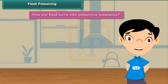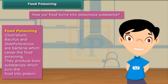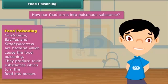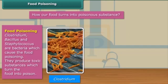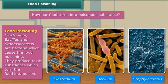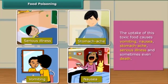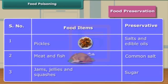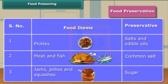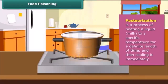Friends, in summer season, if food is left in the open for a longer duration, the food turns stale and finally becomes a poisonous substance. The cause of this is bacteria. There are some bacteria like Clostridium, Bacillus and Staphylococcus which cause food poisoning. This food causes harm to us. We can preserve our food by some methods as listed below. We use the pasteurization process to preserve milk.